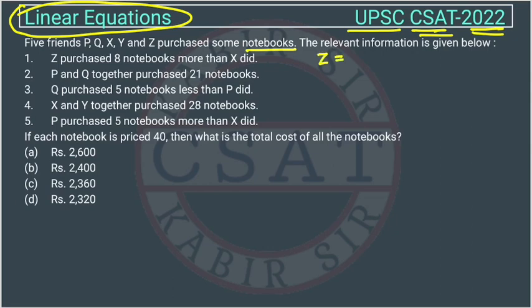So it will be Z equals, Z is purchasing 8 books more than X did. So this will be the equation. P and Q together purchased 21 notebooks. So this will be P plus Q equals 21.